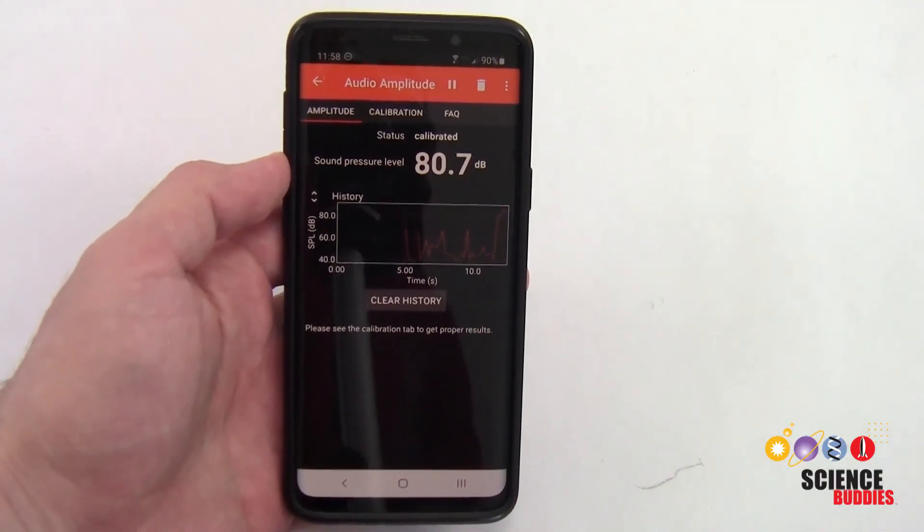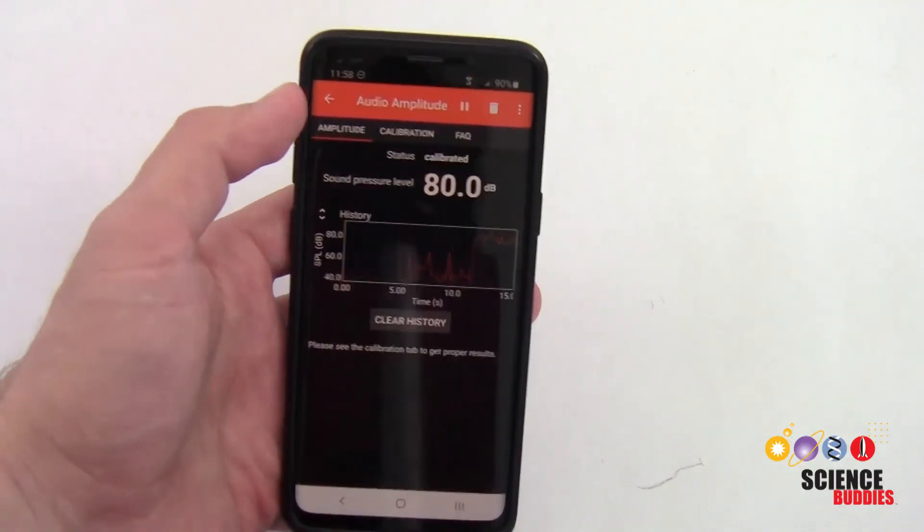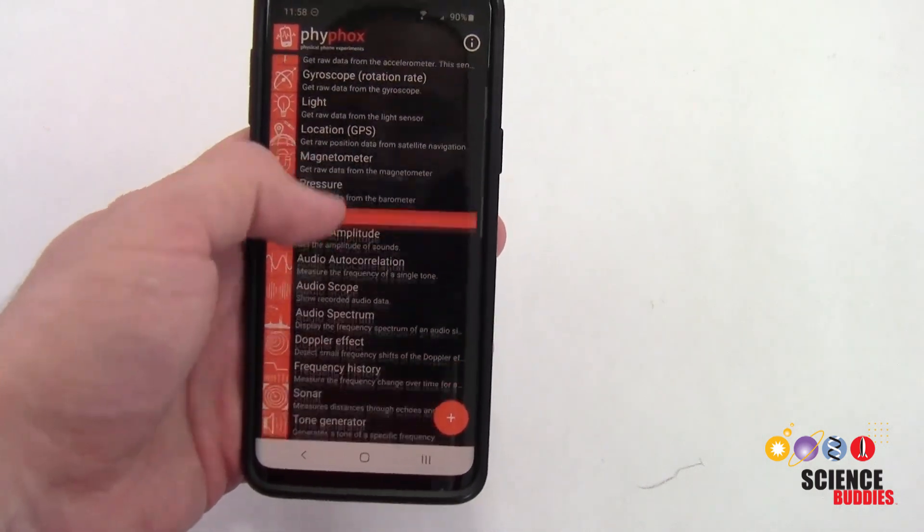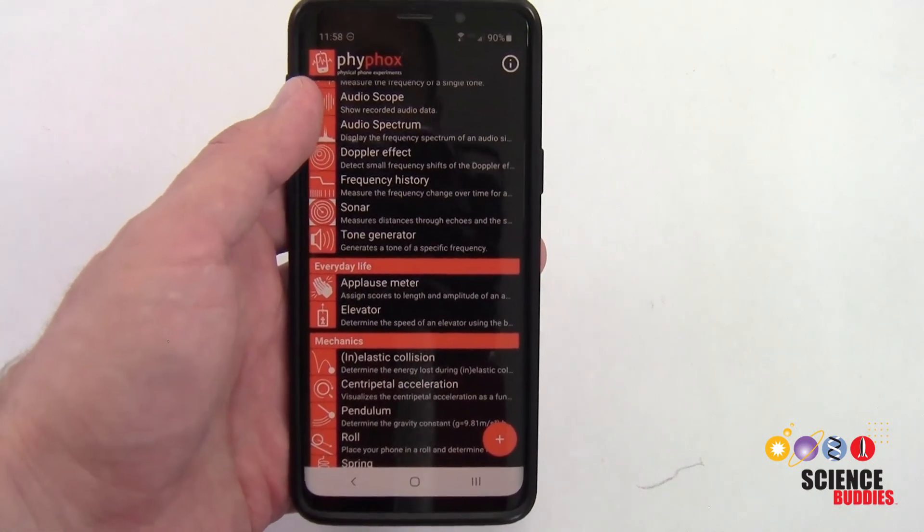For instructions for science projects and lesson plans you can do with Firefox, including the other sensors in the app that measure things like acceleration and light, check out the links in the description below this video.